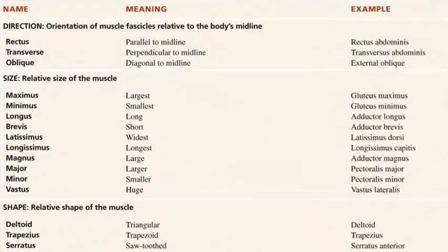Direction refers to the orientation of muscle fascicles relative to the body's midline. Rectus means parallel to the midline, such as the rectus abdominis. Transverse means perpendicular to the midline, like the transverse abdominis. Oblique means diagonal to the midline. Size terms include maximus and minimus, with gluteus maximus being larger than gluteus minimus.